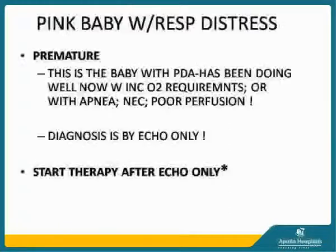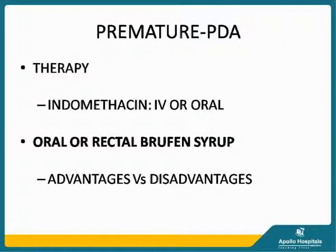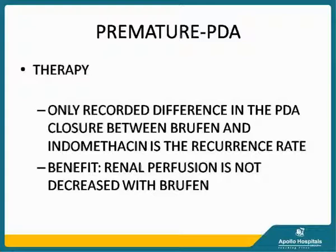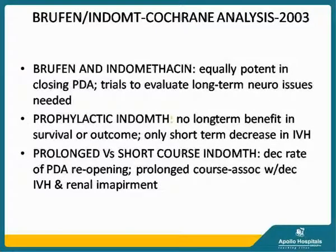Patent ductus arteriosus is a common defect. In pink premature babies with respiratory distress, one must suspect PDA. The usual history is that the patient has been doing well and now presents with increased oxygen requirements, apnea, suspected NEC, or poor perfusion. Diagnosis is made by echo only and therapy can start after echo. Usual therapy was Indomethacin in the past, but oral or rectal Ibuprofen has taken over. The only recorded difference between Ibuprofen and Indomethacin in PDA closure is recurrence rate, and the benefit that renal perfusion is not decreased with Ibuprofen. Both are equally potent in closing PDAs.